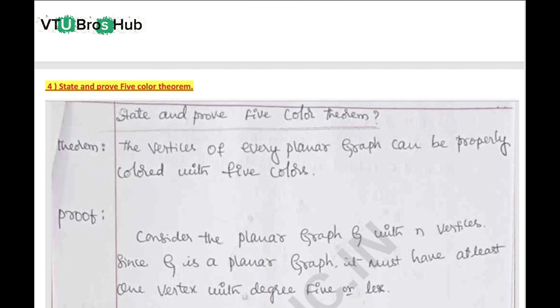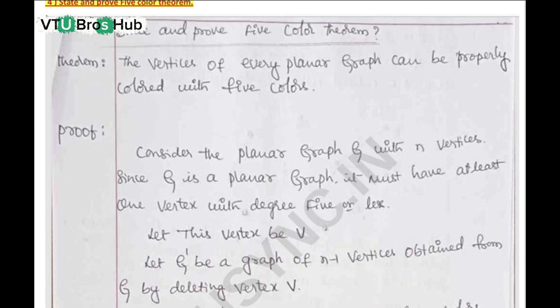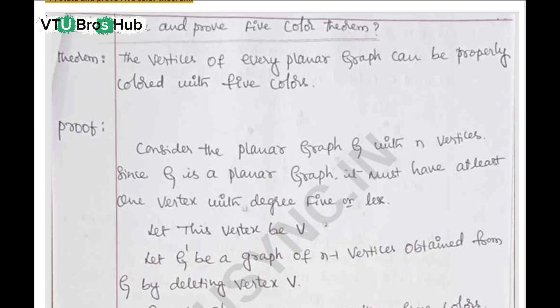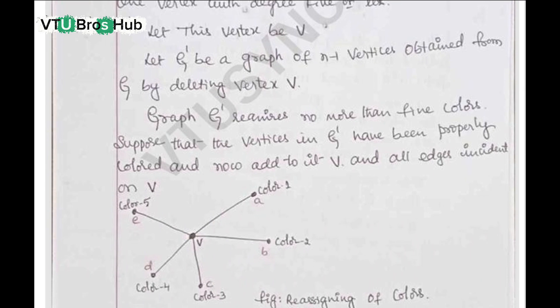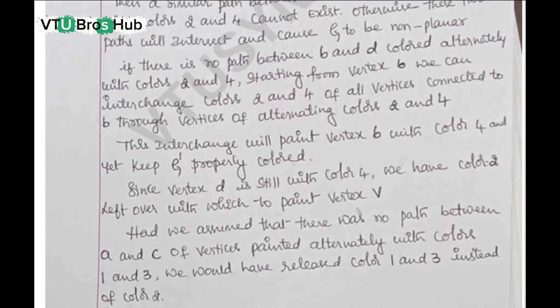State and prove the five-color theorem. What is the five-color theorem? It states that every planar graph can be colored using at most five colors, such that no two adjacent vertices share the same color. The proof is shown now in the PDF image. It uses reduction and induction methods.